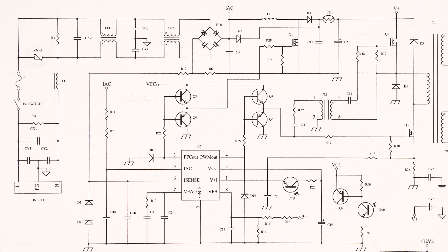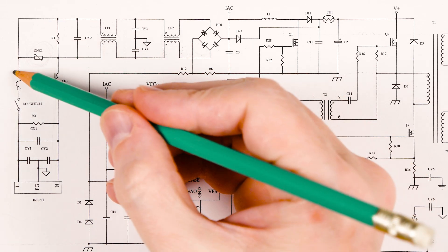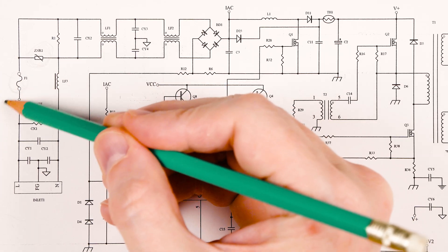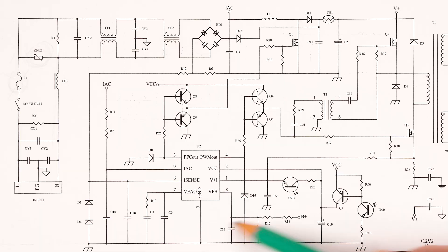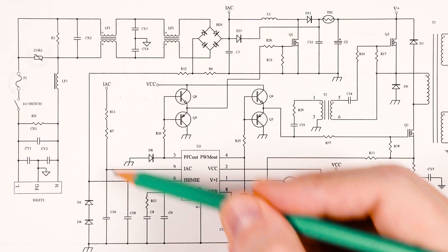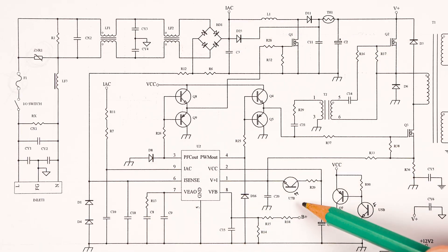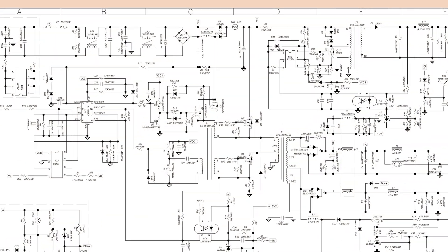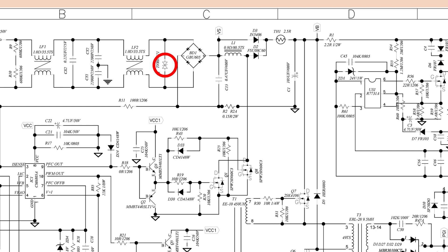What happens if the mains voltage rises and stays high — for example, because of a neutral break? The varistor conducts a huge current, and the fuse before it blows, thus protecting the rest of the PSU. In this other power supply, instead of a varistor, there is a TVS diode.